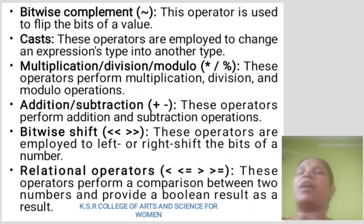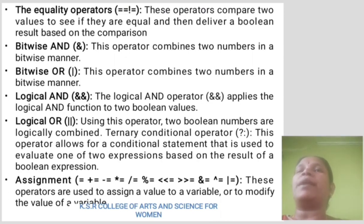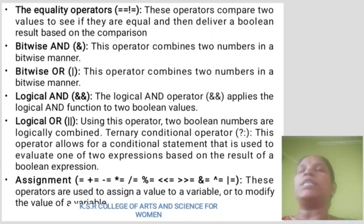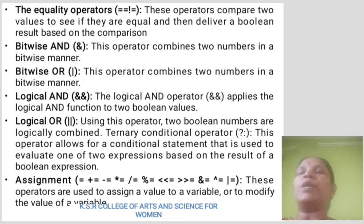Relational operators: perform a comparison between two numbers and provide a boolean result. Equality operators: compare two values to see if they are equal and deliver a boolean result. Bitwise AND: combines two numbers in a bitwise manner. Bitwise OR: combines two numbers in a bitwise manner. Logical AND: applies in a bitwise manner. Logical OR: two boolean numbers are logically combined. Ternary conditional operator: allows a conditional statement to evaluate one of two expressions based on the result of a boolean expression. Assignment operator: used to assign or modify the value of a variable.